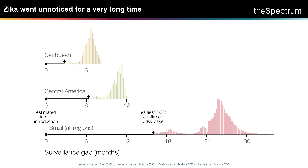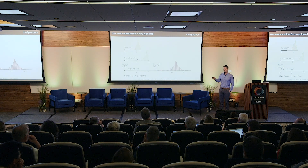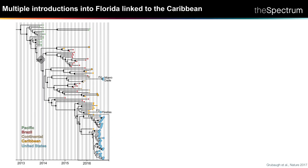In other regions, for the Caribbean the lag between the outbreak starting and us realizing it is about three months; in Central America it's about six months. Florida specifically also has a lag of about three months. But another question we were interested in is: how many times did this virus actually get into Florida? Is it something that happens once and then you have an outbreak, or does it happen multiple times? Via the viral genomes we can show this is something that happens over and over again — it's not that the virus comes in once causing an outbreak, but that it's repeatedly coming into Florida and then causing an outbreak.